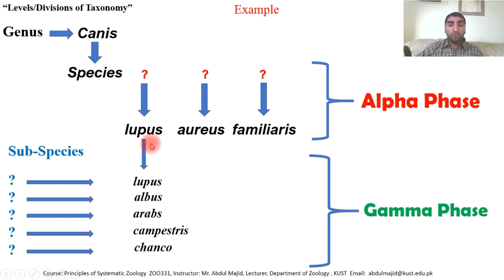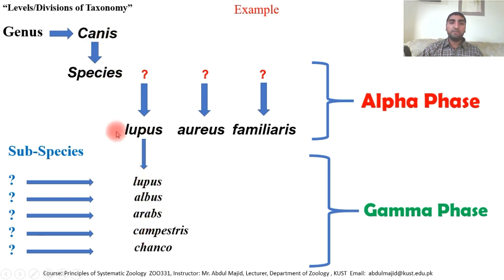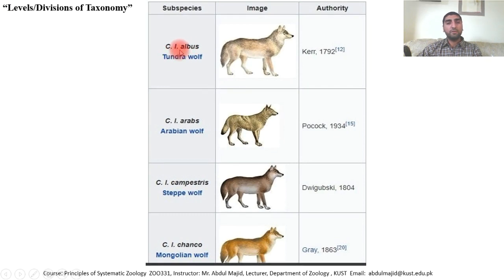Those groups or species that have subspecies have a gamma level; those without subspecies have only alpha and beta levels. The five wolf subspecies become: Canis lupus lupus, Canis lupus albus (tundra wolf), Canis lupus arabs (Arabian wolf), Canis lupus campestris (steppe wolf), and Canis lupus chanko (Mongolian wolf).